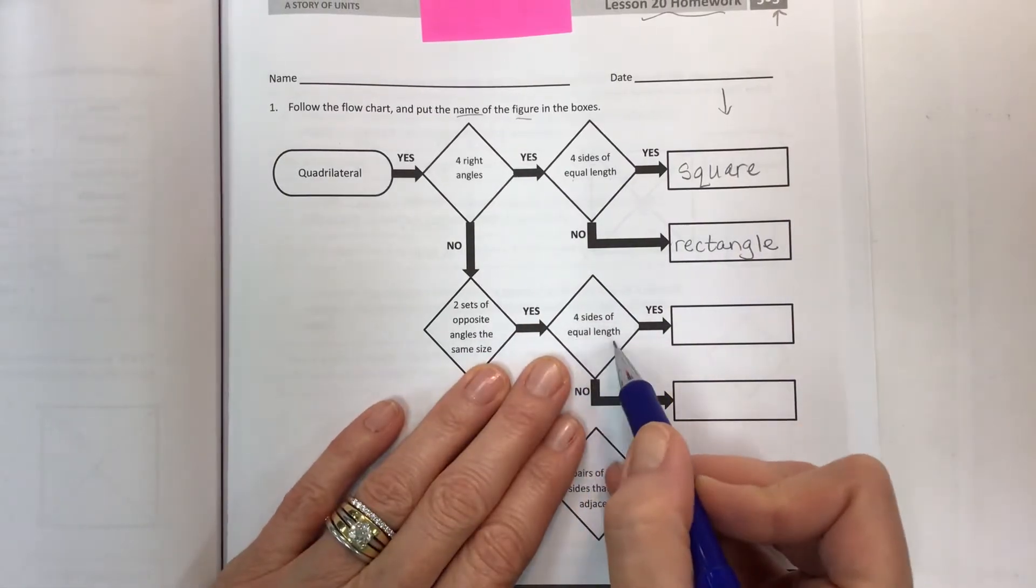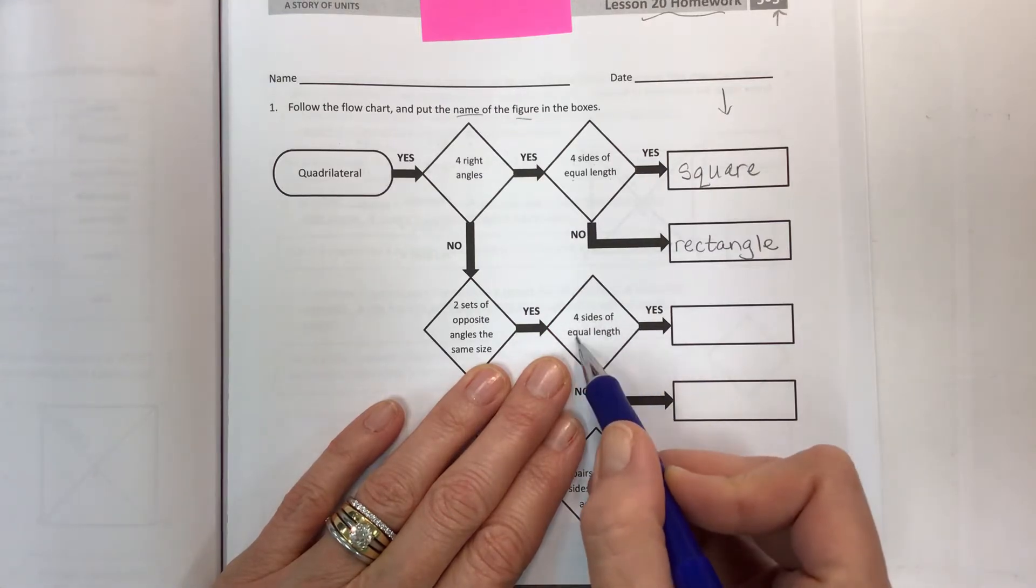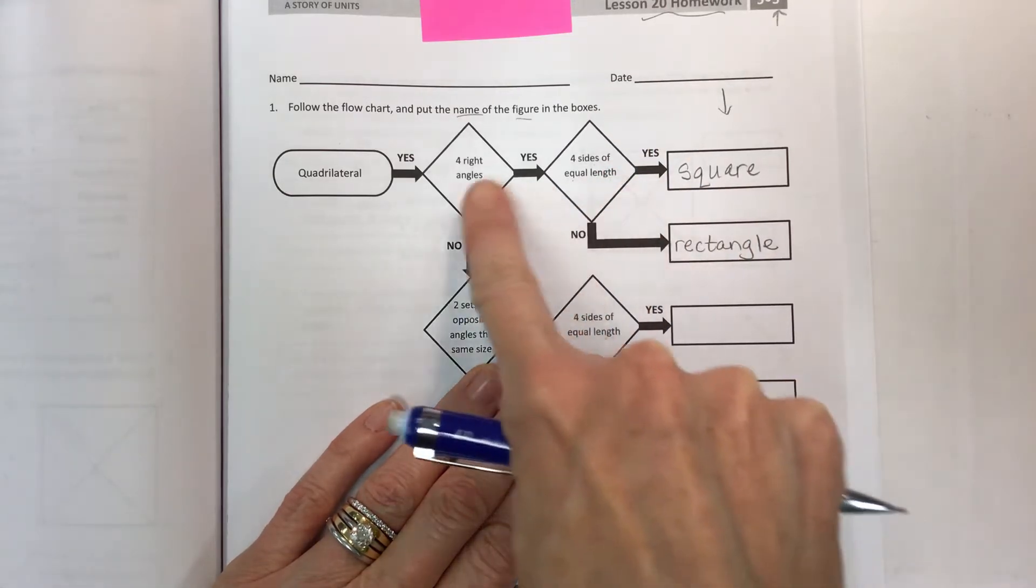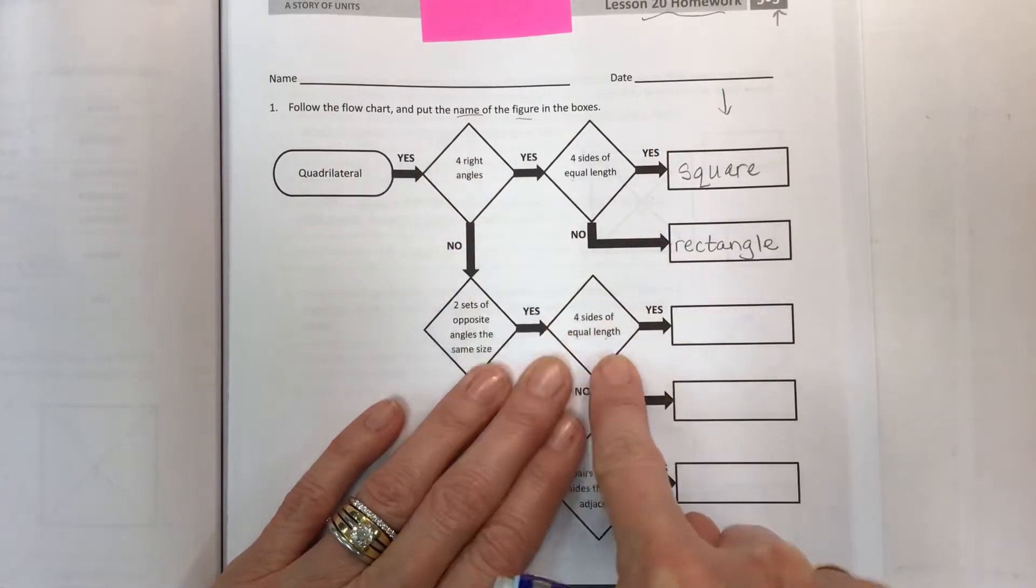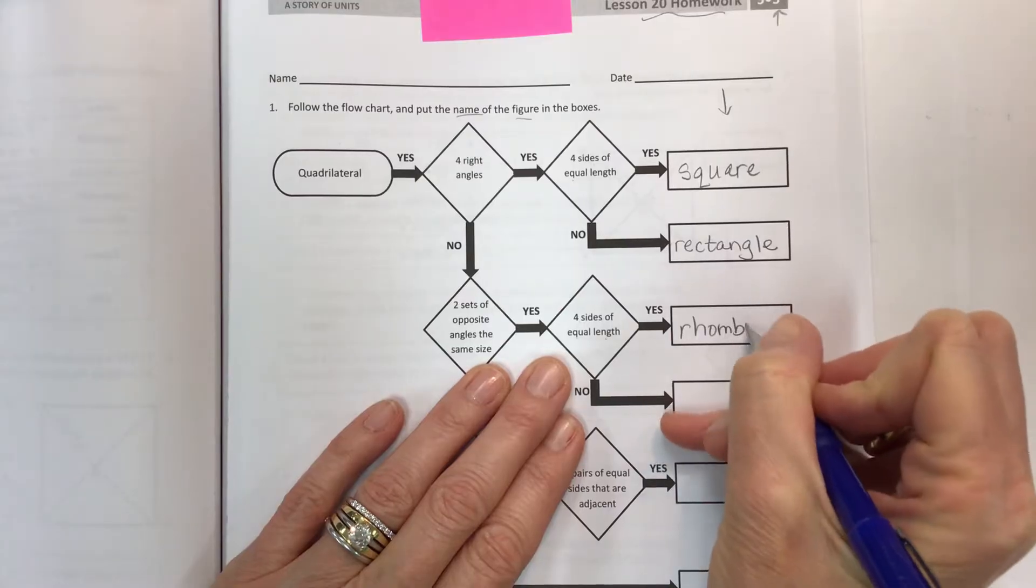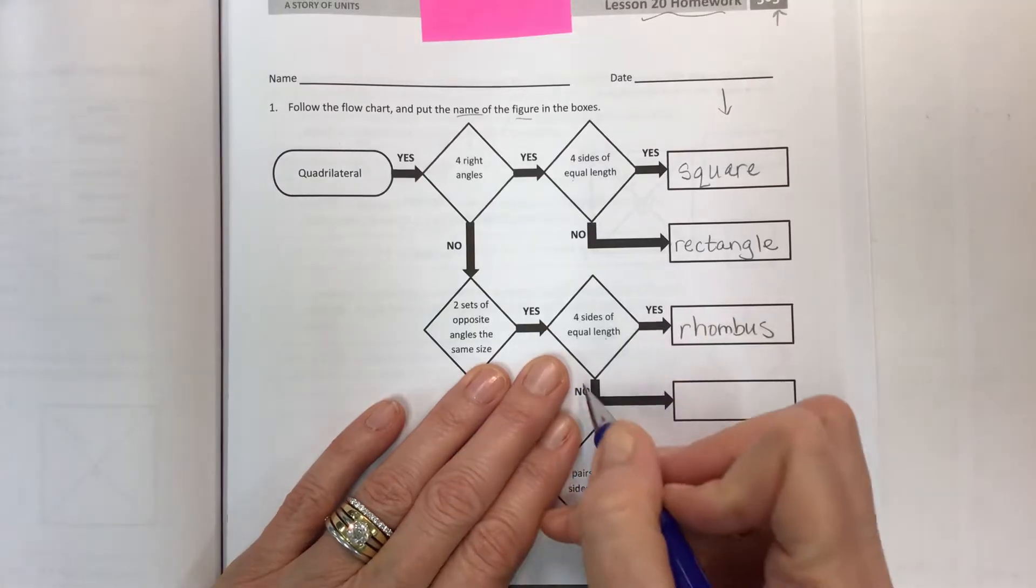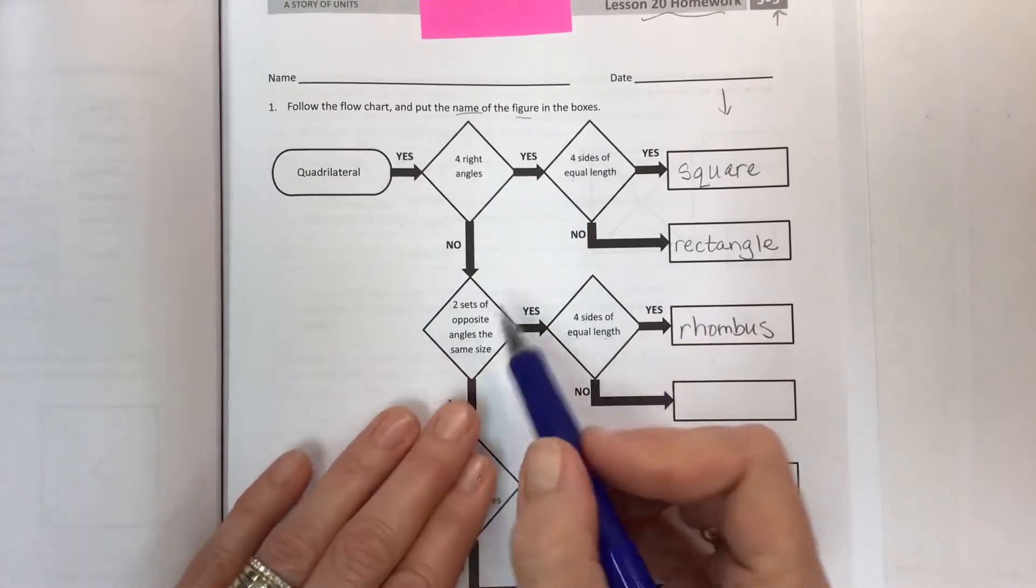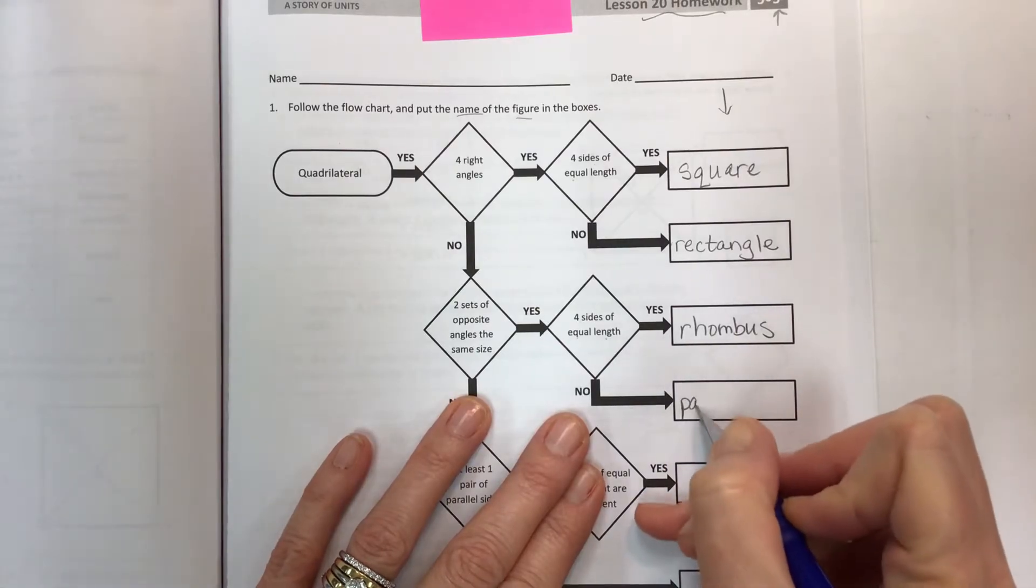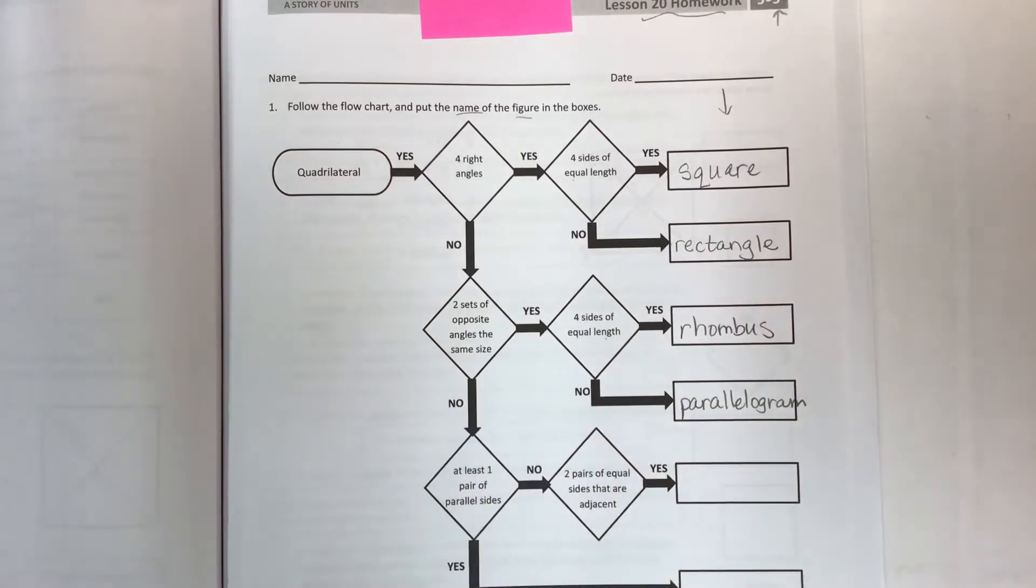Are four sides of equal length? Now you have to consider, well if we have four sides that are equal and that's kind of like this one here but nothing about right angles, it does not have four right angles, what is that shape? That's your rhombus. Now if you don't have four equal sides—no you don't—but you still have two sets of opposite angles the same size, then you're talking about the parallelogram.